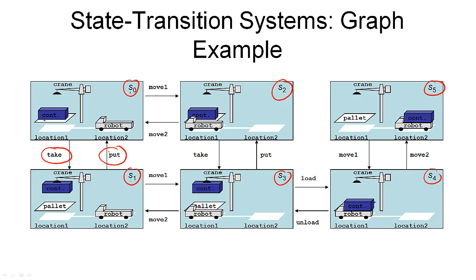The take action gets us from state as 0 to state as 1, and so on. Put action would get us back to that state. We have a move 1 action, which moves the robot to location 1, and we have a move 2 action, which moves the robot to location 2. As you can see from the state transitions, this system is static, which means there are no events happening. All the actions are under our control. Also, the system is deterministic, which means every action leads to exactly one other state.